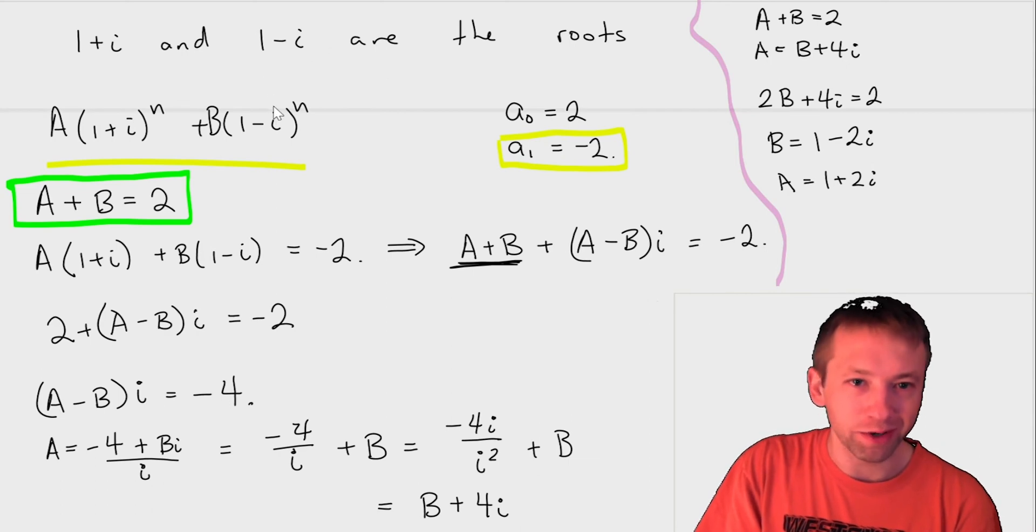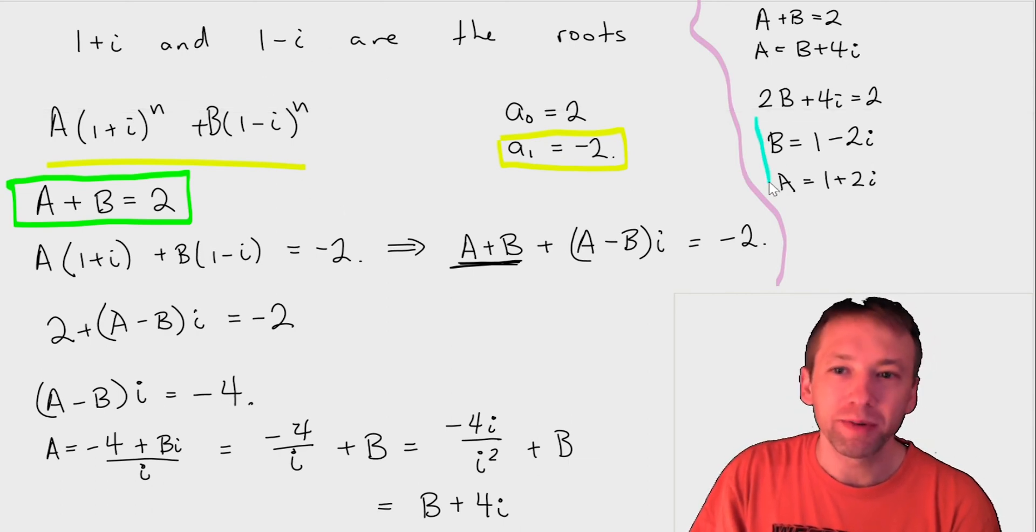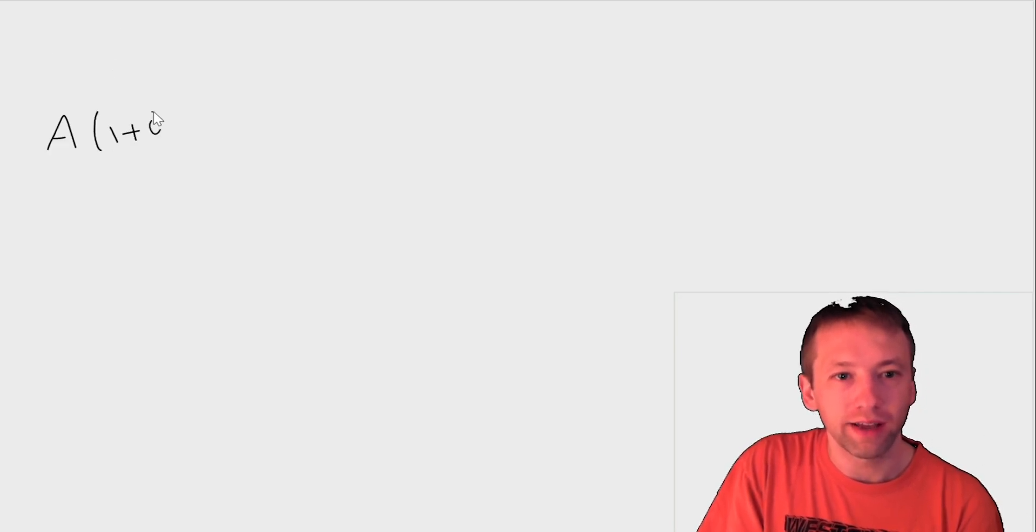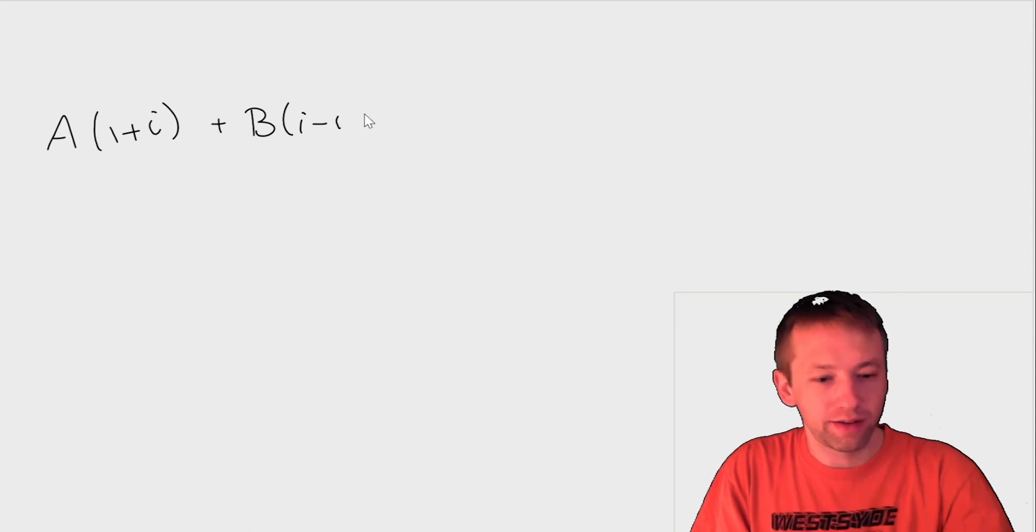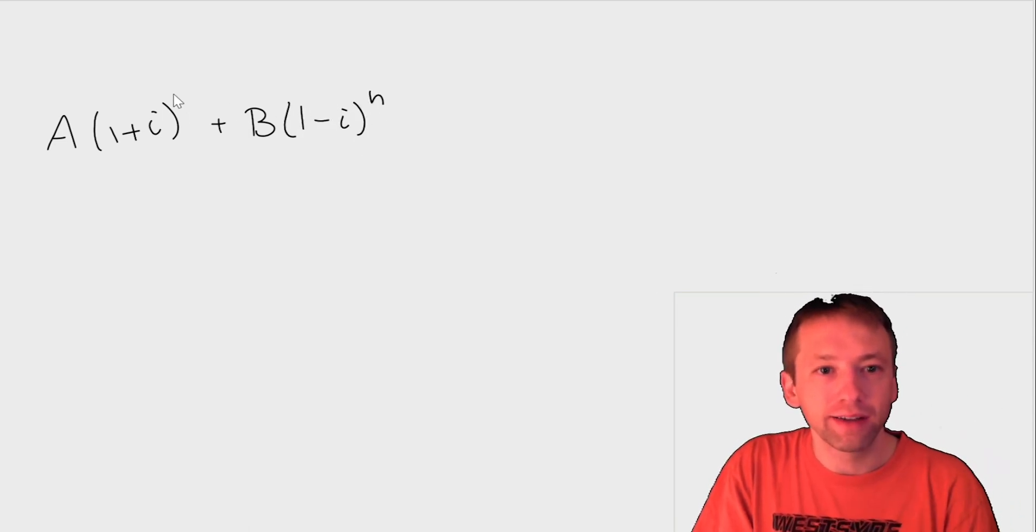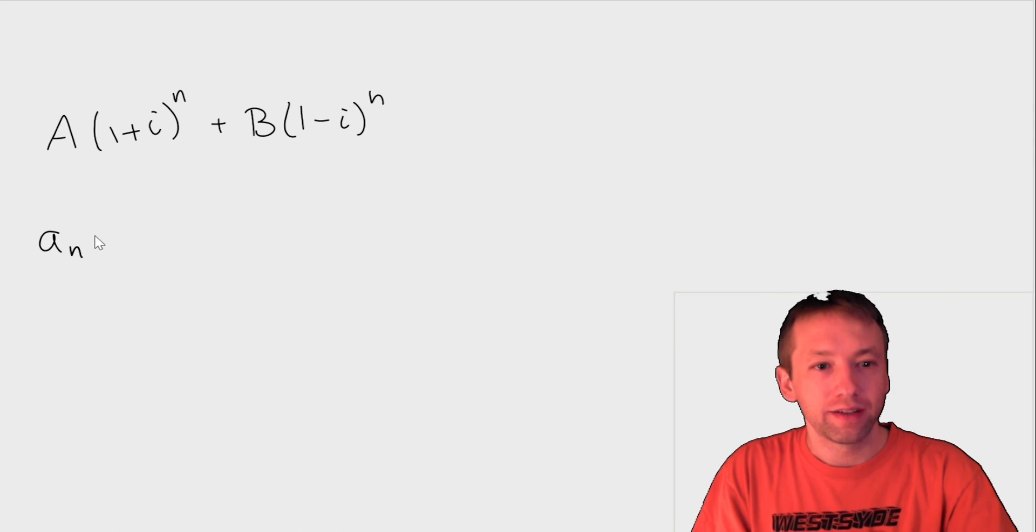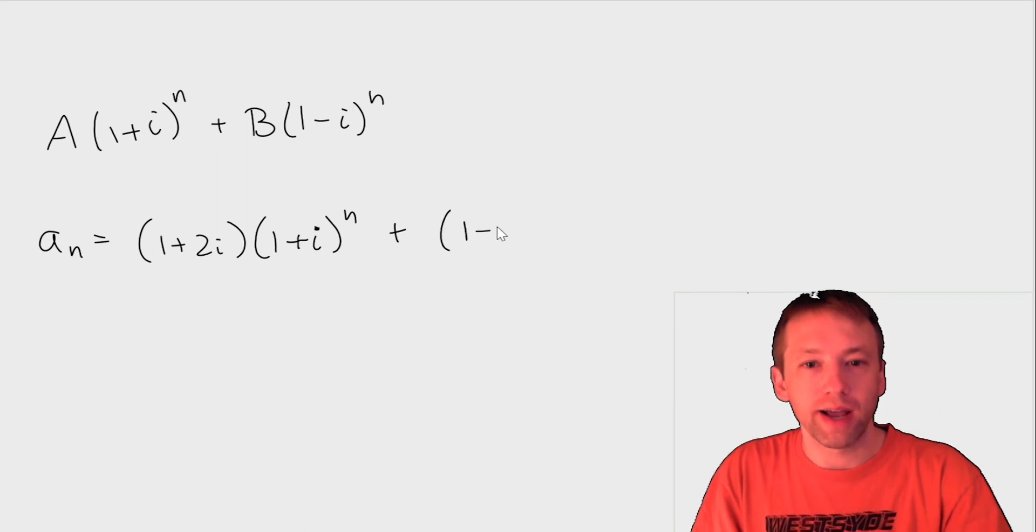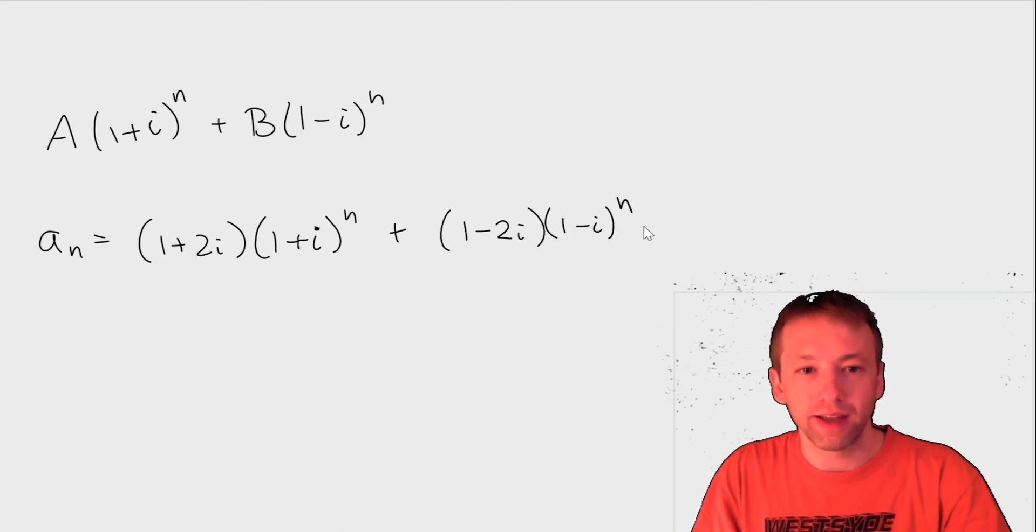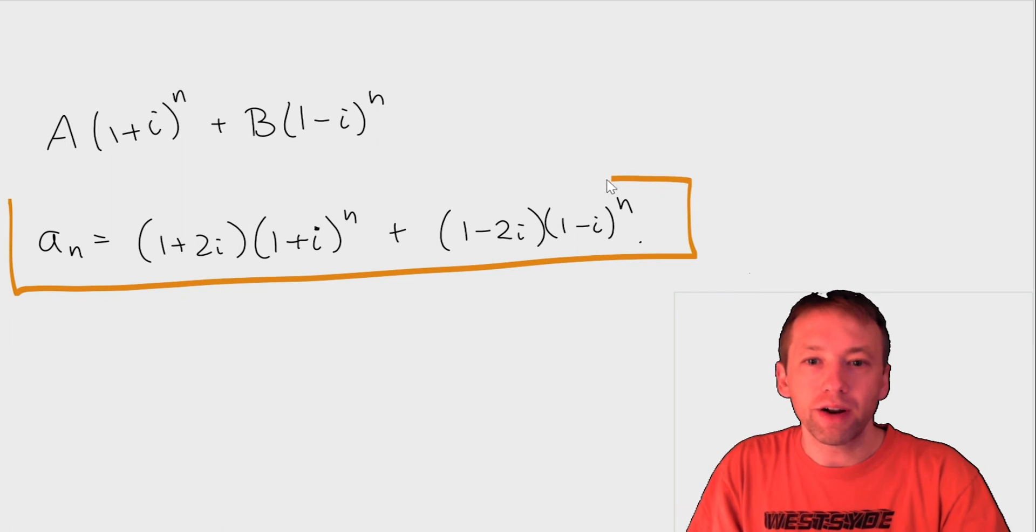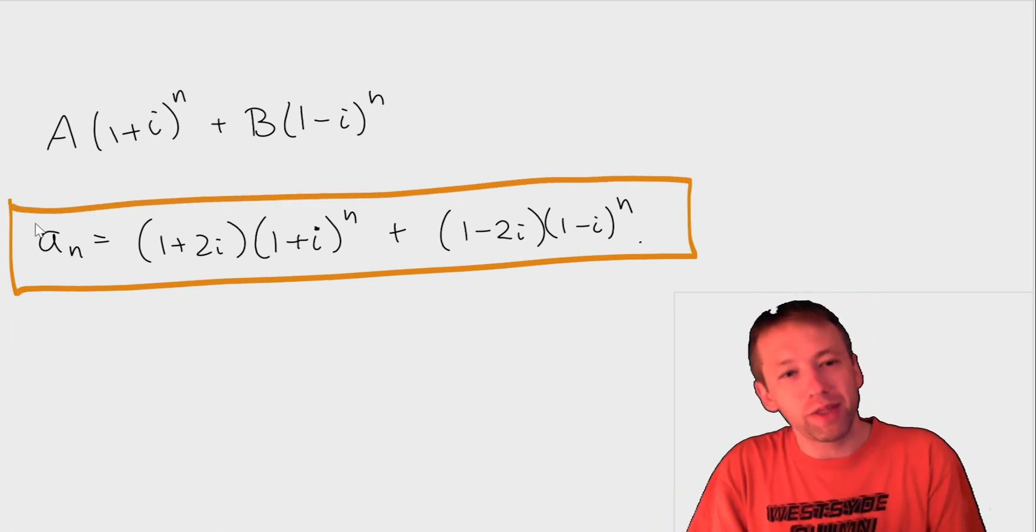And this seems weird because these are complex numbers and I know that you're maybe not the most familiar with complex numbers, but this actually gives you the solution. So remember our general solution was A(1 + i)^n + B(1 - i)^n. And what we found, we solved for A and B, and what we found is that a_n, so our solution is (1 + 2i)(1 + i)^n + (1 - 2i)(1 - i)^n. And that is the final answer, which seems extremely weird because we've got all these complex numbers floating around, but somehow I know that a_n is an integer.